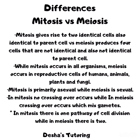We can also observe some differences between mitosis and meiosis. Mitosis gives rise to two identical cells, also identical to the parent, while meiosis produces four cells that are not identical to each other or the parent cell. Mitosis occurs in all organisms, while meiosis primarily occurs in reproductive cells of humans, animals, plants, and fungi. Mitosis is primarily asexual while meiosis is sexual. In mitosis no crossing over occurs, while in meiosis crossing over occurs which creates genetic variation in gametes. In mitosis there is one round of cell division, while in meiosis there are two phases — meiosis 1 and meiosis 2.